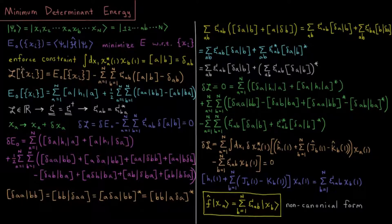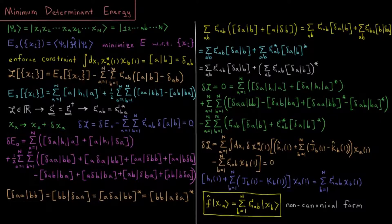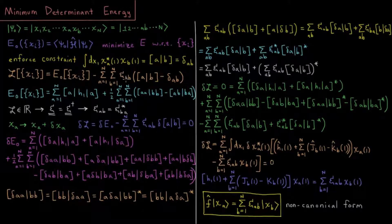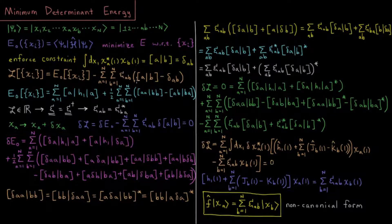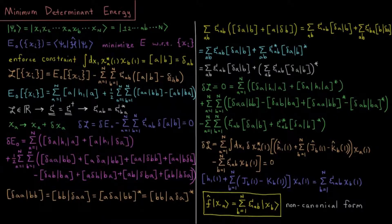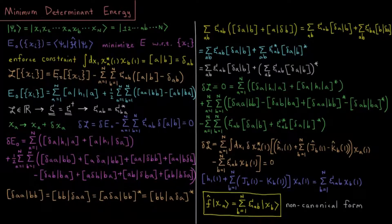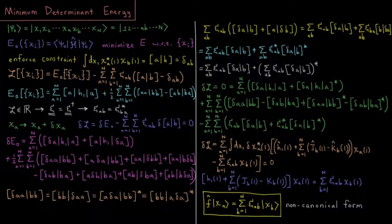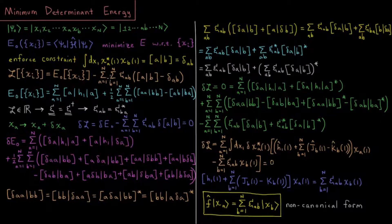Our Lagrangian is going to be a functional of the set of all these spin orbitals, which is the total energy minus a penalty for any deviations from orthonormality. We have a double sum over all orbitals of epsilon ab, a matrix of Lagrange multipliers, times the overlap of a and b minus the Kronecker delta. If our energy is decreasing due to changes in the orbitals, that's fine. But if it's decreasing due to non-orthonormality or changes in normalization, that's penalized in the second term.